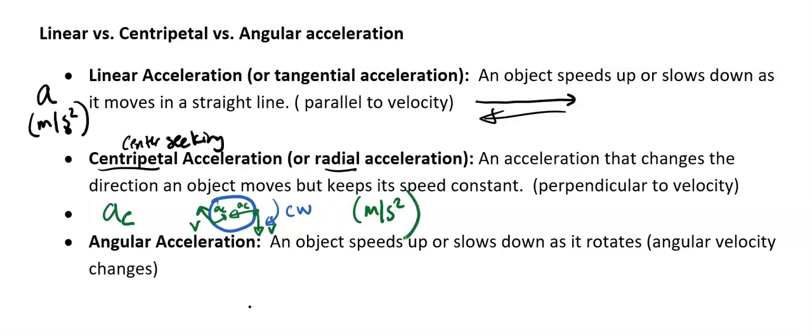Our last acceleration, which is the new one we're talking about, is angular acceleration. This is when an object speeds up or slows down as it rotates. Angular velocity is changing. That is like if we have something rotating, let's say it's rotating counterclockwise, and let's say it speeds up as it rotates, or it slows down.